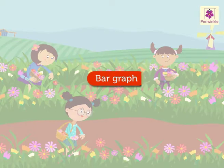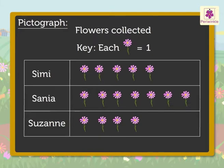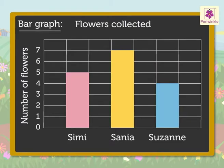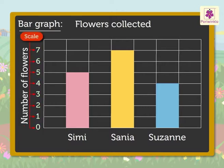Now let's look again at the data chart of the flowers collected. We have already represented this data using a pictograph. Another way of representing this data is through a bar graph. Every bar graph has: one, a title which tells us what the bar graph is about; two, labels on both the side and the bottom of the graph which tell us what kind of data is shown; and three, a scale which tells us the number each block is equal to.